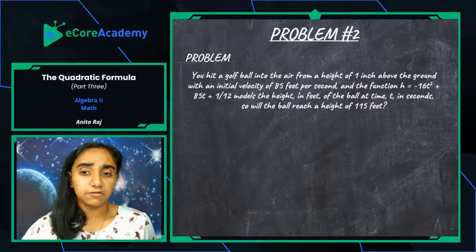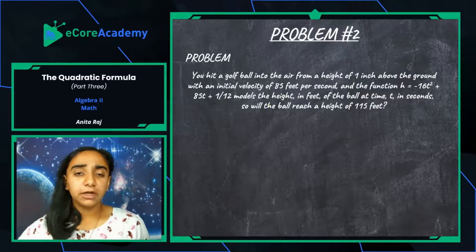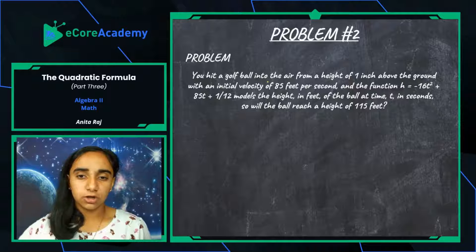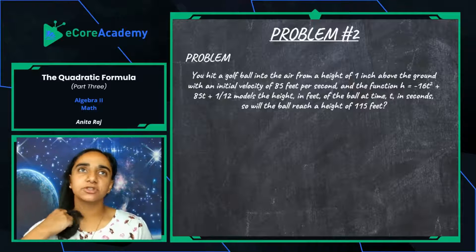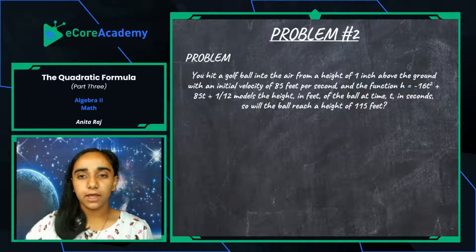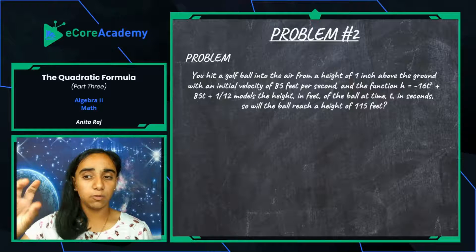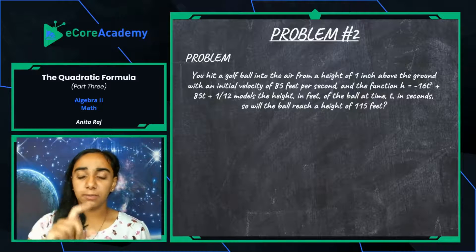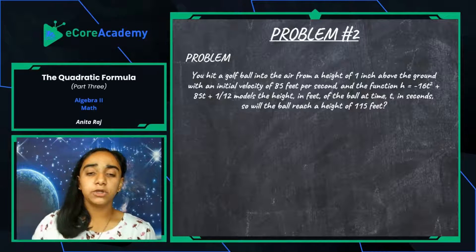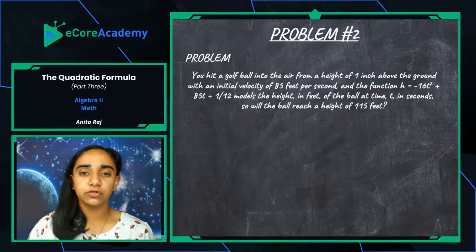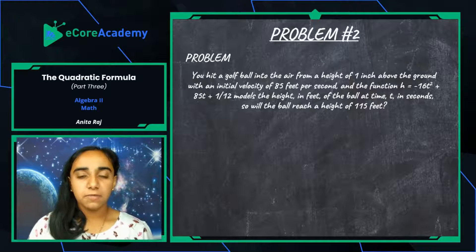After reading that you're probably wondering what's going on, but most of it is just context. We need to pick out the important stuff. We're told a golf ball is hit from a height of one inch — propped up on a tee about one inch above the ground — and swung with an initial velocity of 85 feet per second. The good thing about this problem is that we're not asked to create the function; we're already given it.